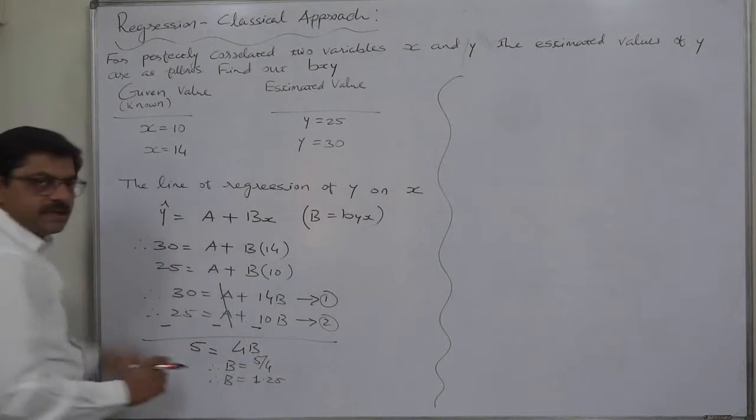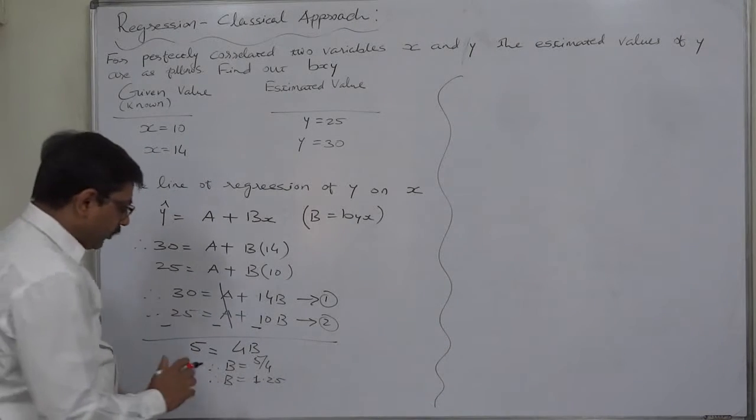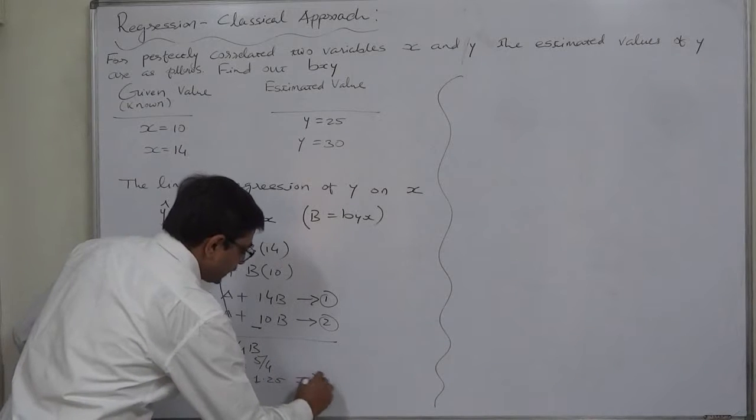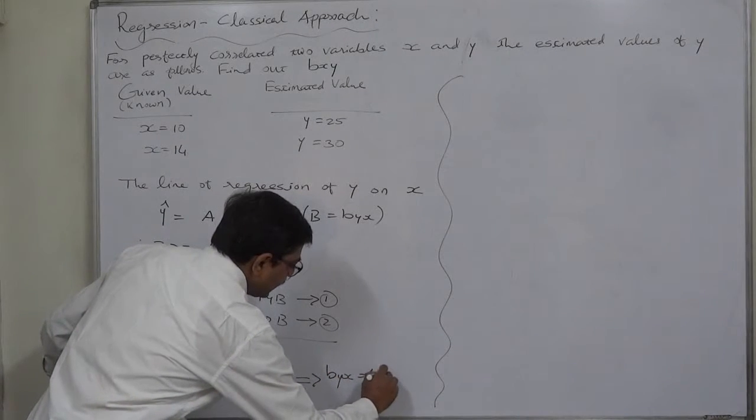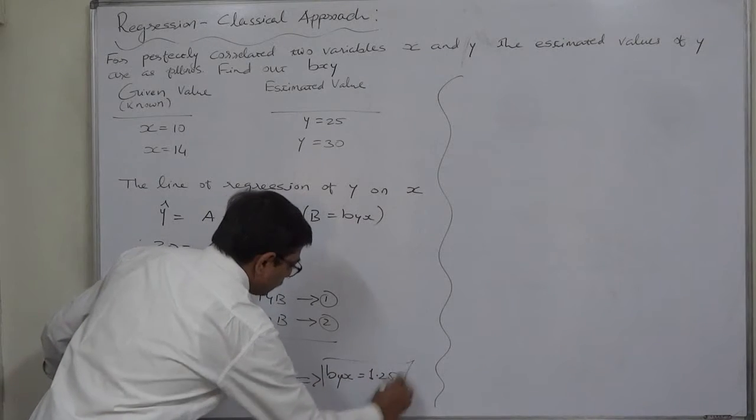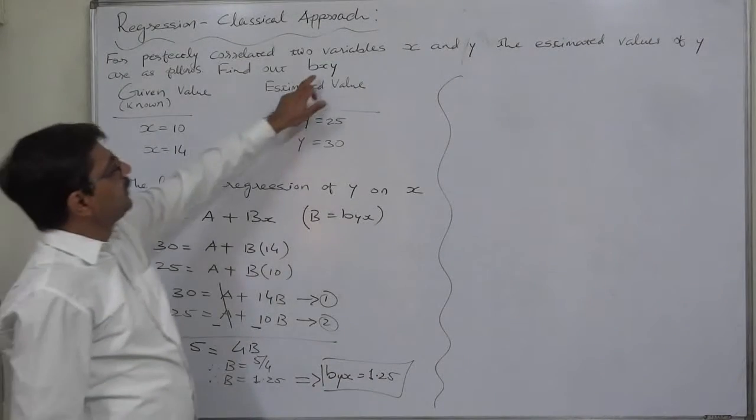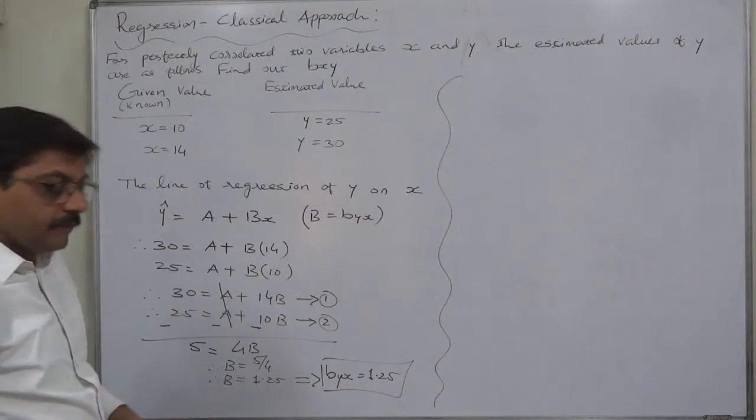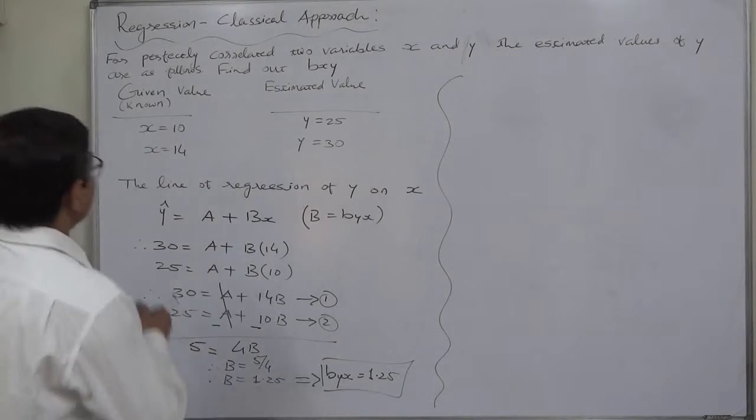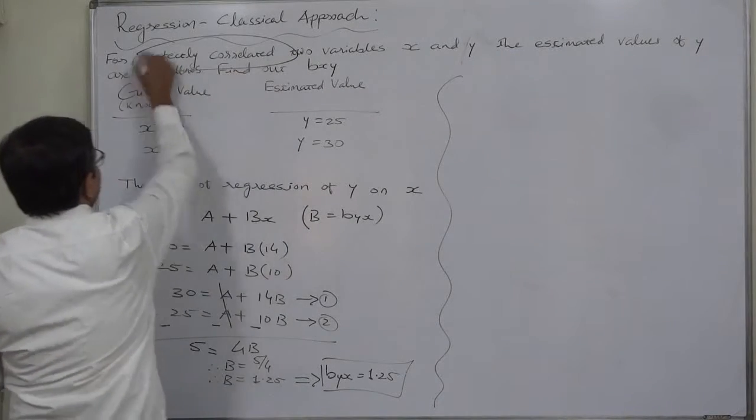Now, we know that in the line of regression of y on x, b stands for b y x. That means b y x is 1.25. But we need to find out b x y not b y x. Now, what? We have another important thing available. x and y are perfectly correlated.